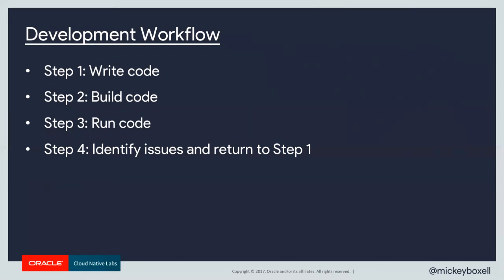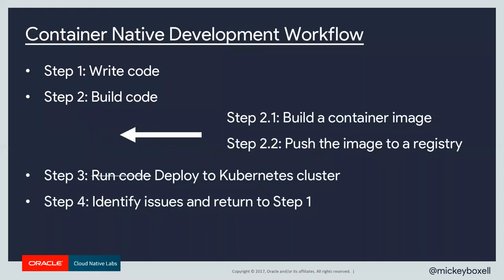When you switch over to cloud-native development, there are a few more steps. You still write and build code similarly, but after building your code — say, a JAR file — you also have to build a container image. If you're connecting to a remote Kubernetes cluster, you'll have to push that container image to a registry service. Then instead of running a JAR file, you'll have to create a manifest to deploy to the Kubernetes cluster, and only then can you identify issues and return to step one.